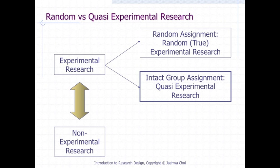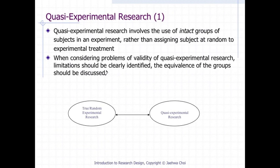Quasi-experimental research involves the use of intact groups of subjects rather than randomly assigning subjects to experimental treatments. When considering validity, limitations should be clearly identified and the equivalence of groups discussed. If intact groups are not equivalent, conclusions are not free from intact group differences. For example, in a teaching method study, we may not know whether outcome differences result from teaching methods or pre-existing group differences. Random experimental design avoids this issue when subject size is large.